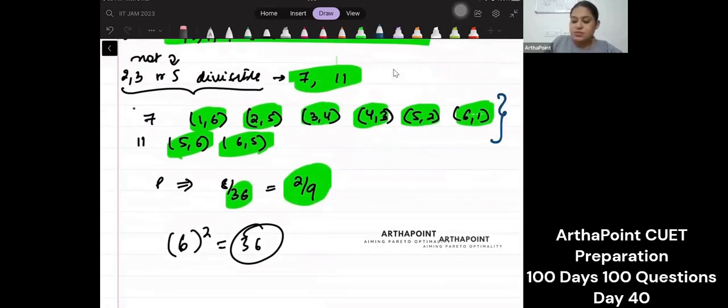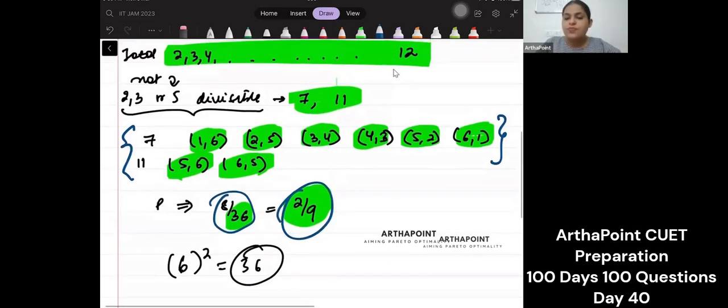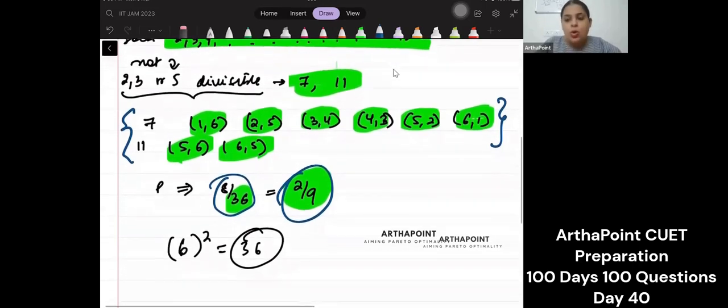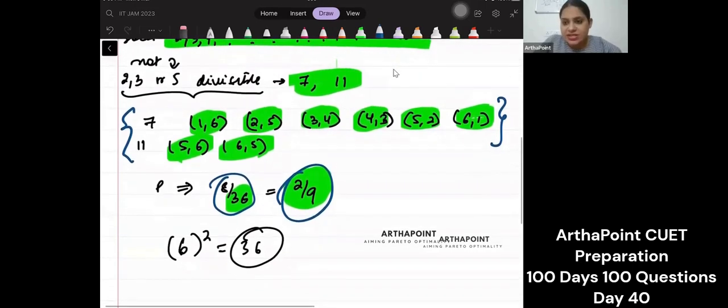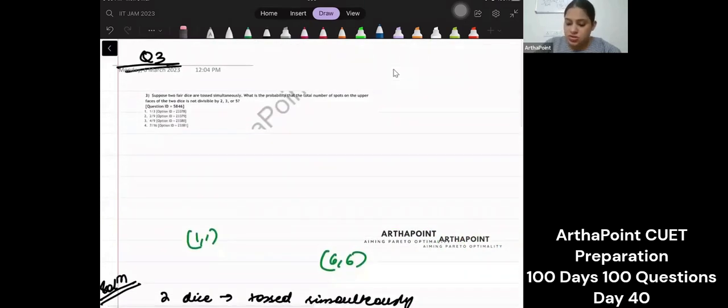How many times will you get numbers which are not divisible by 2, 3, or 5? These are 8 combinations. So you have 8/36, which means 2/9. Very simple question. They're just asking you out of the sums, which are those where you do not get the sum divisible by 2, 3, or 5. So the answer is 2/9.